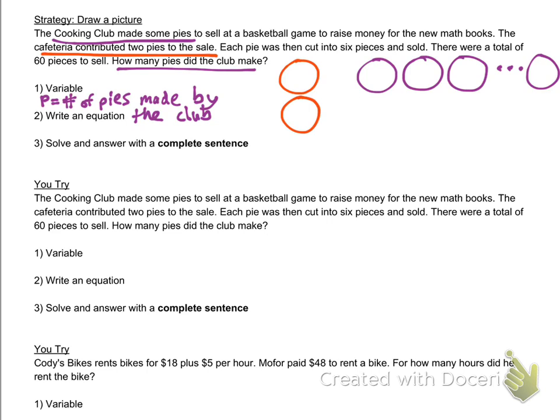There are actually P pies, but I don't know how many it is, so I'm just going to leave that dot dot dot there so I can visualize it. Lastly, we know that they were cut into six, and that's both the cafeteria pies and the cooking club pies. Let's cut those all into six. The total of 60 pieces means we're going to add all those pieces together, and it should add up to 60.